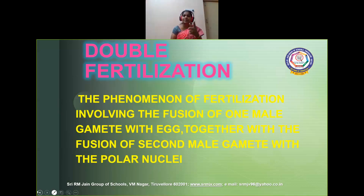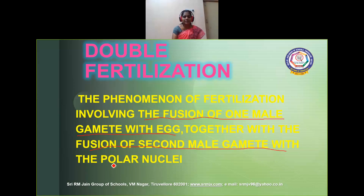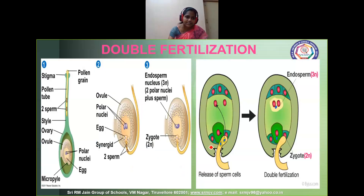The germ cell of the pollen grain is going to divide mitotically to produce two male gametes. As there is the presence of two male gametes, two times fertilization takes place. Two times: the first time, the first male gamete fuses with the egg inside the ovule. The second fusion is the fusion of the second male gamete with polar nuclei. So to learn this, let's have a recap of our embryo sac structure, to make it clear about this polar nuclei and egg cells.